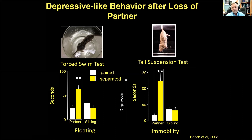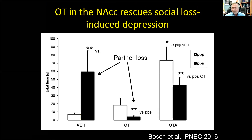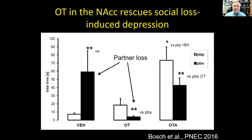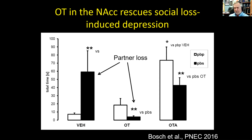Something happens when the animal forms this bond so that when they're away from that partner, they show depressive-like behavior. We also showed that their adrenal glands get larger, and there's a CRF activation in the brain when they lose their partner. CRF receptors are on oxytocin neurons, and CRF activation actually inhibits oxytocin neurons from releasing oxytocin. When we separate the partner and microinfuse oxytocin directly into the nucleus accumbens, you can completely rescue this depressive-like phenotype from social loss.